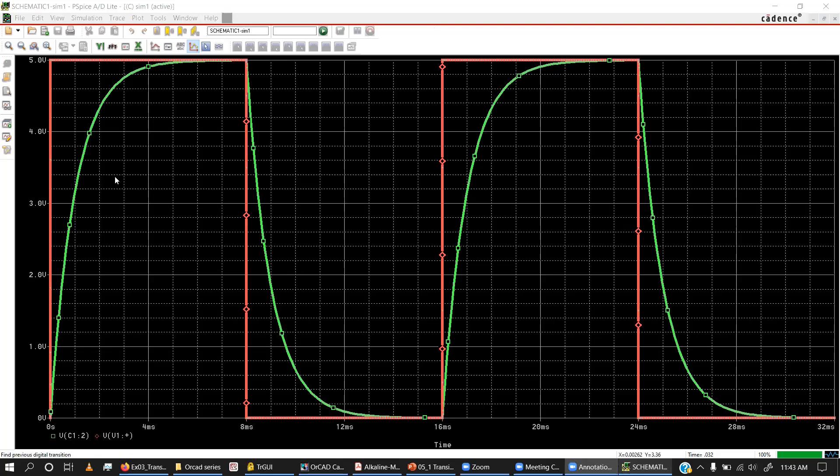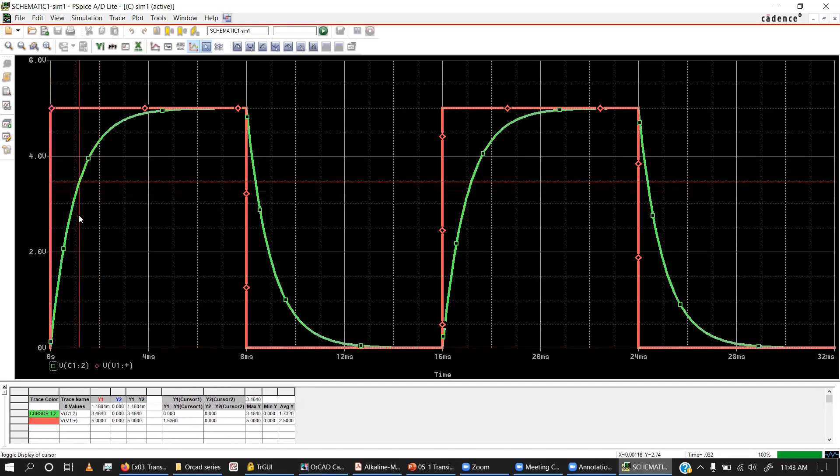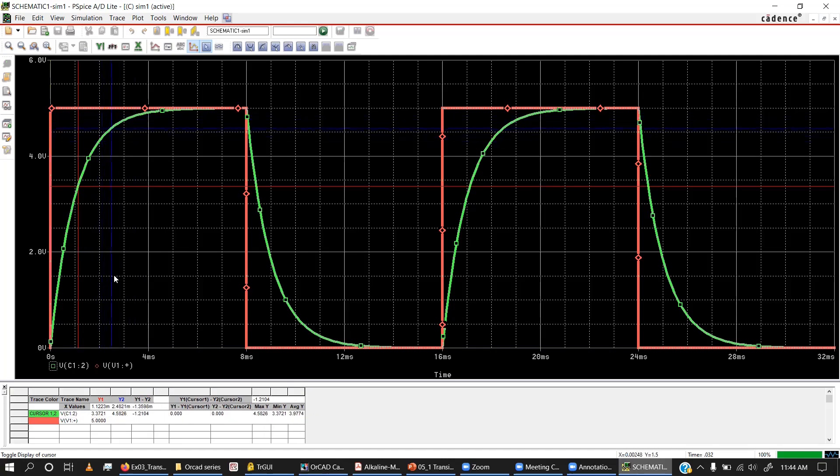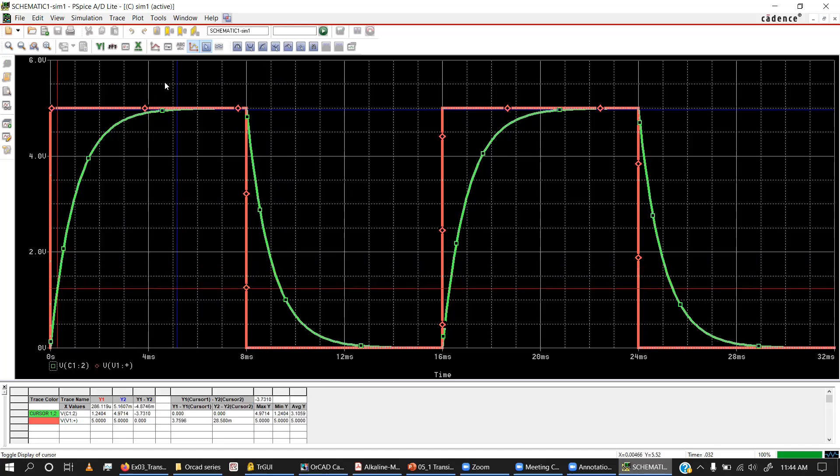If you want, we can use our cursor and do certain measurements. Let me enable cursor. This is the button to enable cursor. When I move my mouse pointer, you can see the cursor is moving. The measurements are taken for both red and green curves from this red cursor. If you want another cursor, use the right mouse button so you have two cursors to do measurements. There are cursor moving commands as well.